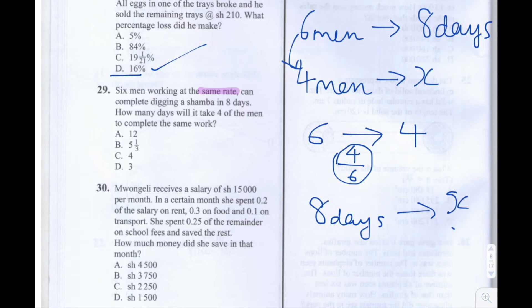Eight days to X days. Since we know that X days is going to be more than eight days because we're using fewer men, so it will take longer, we're going to times eight by the inverse of this. So we'll times it by six over four. So the answer to this: X is equal to eight times by six over four.